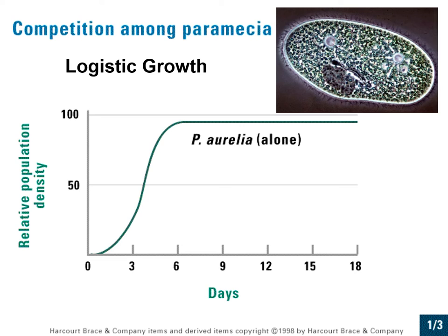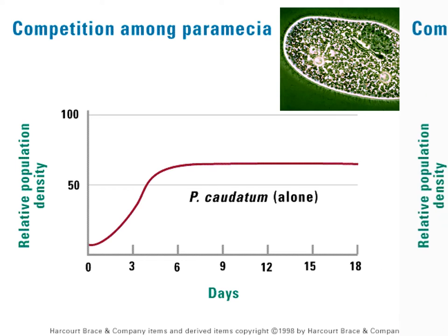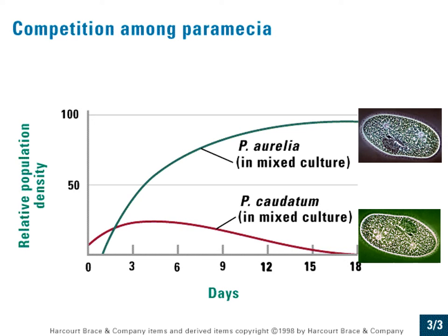When paramecium Aurelia is grown by itself, it takes on a logistic growth pattern — it grows and then levels off. The same thing happens with paramecium Caudatum when grown alone. But when you put the two together, they compete and one excludes the other. Aurelia is the winner and Caudatum is the loser — Aurelia can outcompete Caudatum for that niche and in that area.